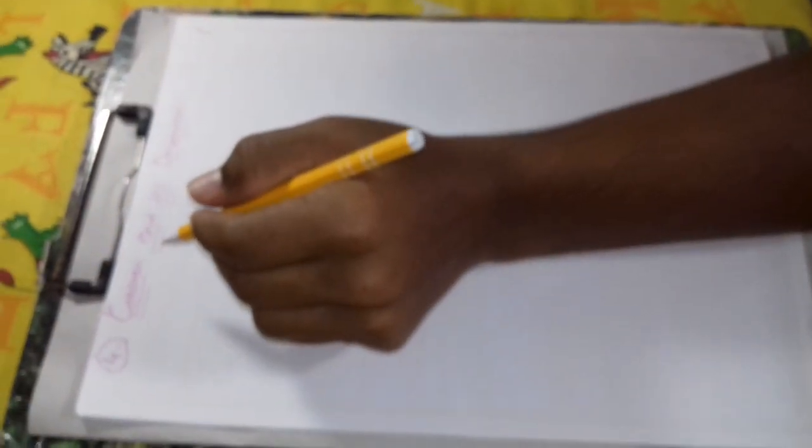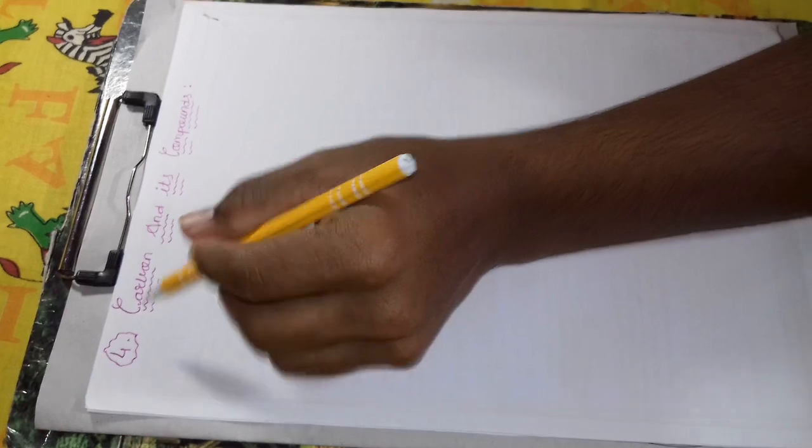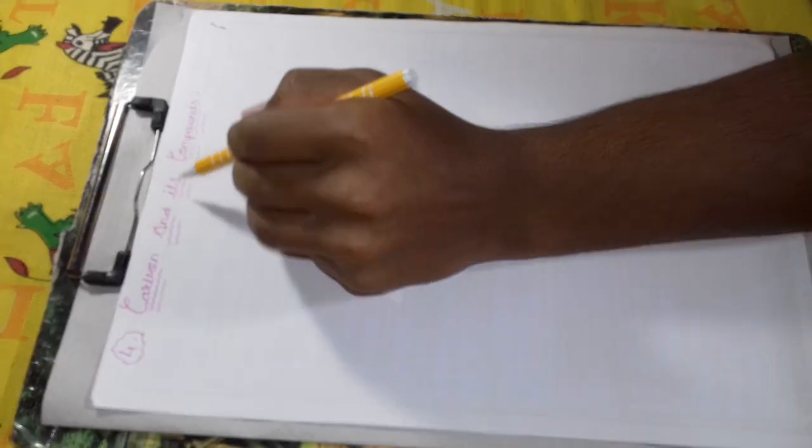Okay, let's start our new chapter, that is chapter number four of science, class 10, Carbon and its compounds.